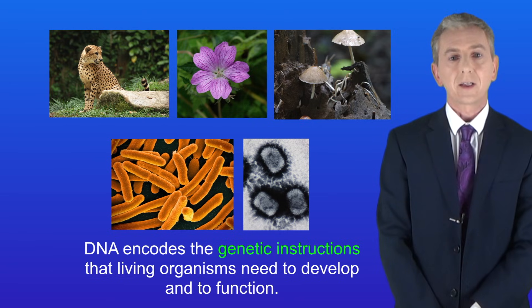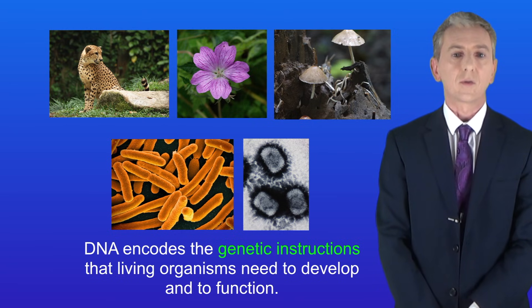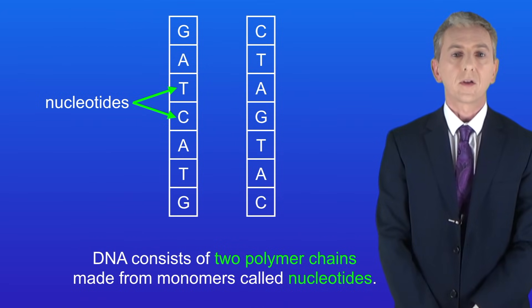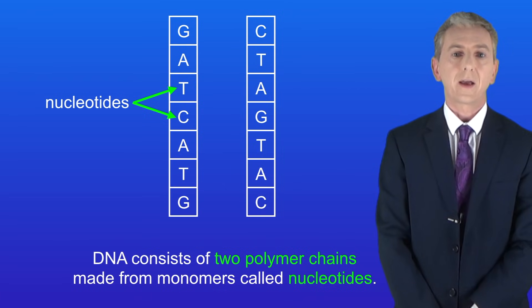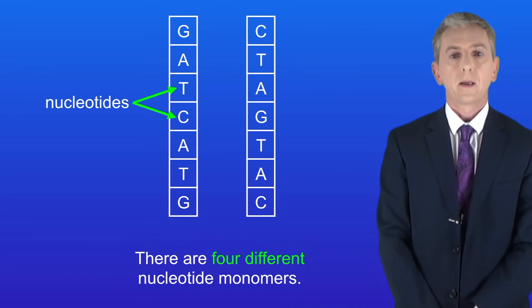DNA encodes the genetic instructions that living organisms need to develop and to function. DNA consists of two polymer chains made from monomers called nucleotides and it's really important that you learn that word. I'm showing you here a simple diagram of the two polymer chains in DNA. As you can see there are four different nucleotide monomers and again you could be asked that.